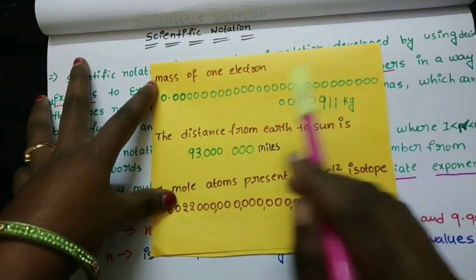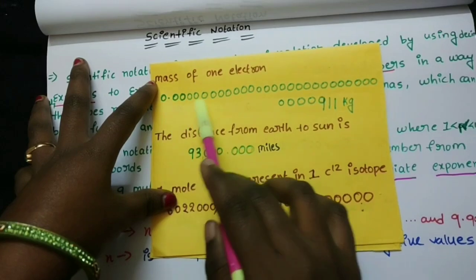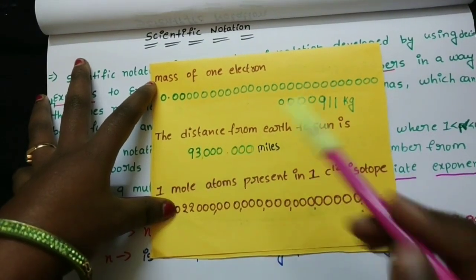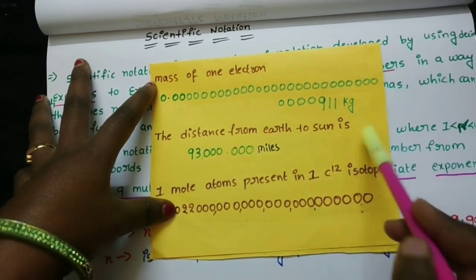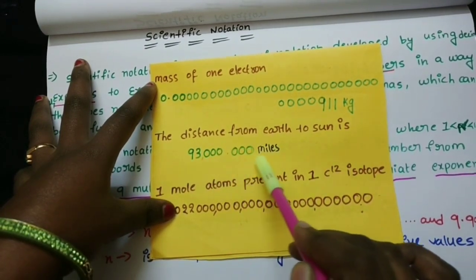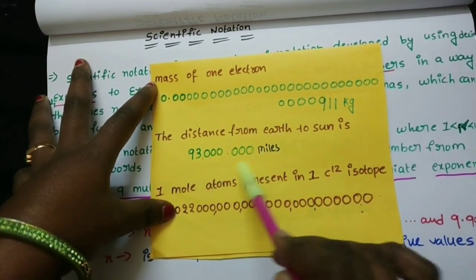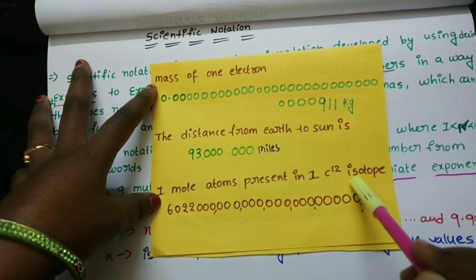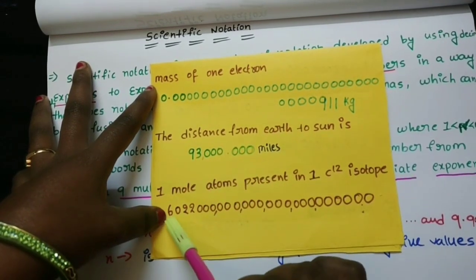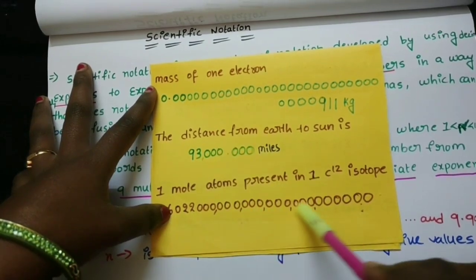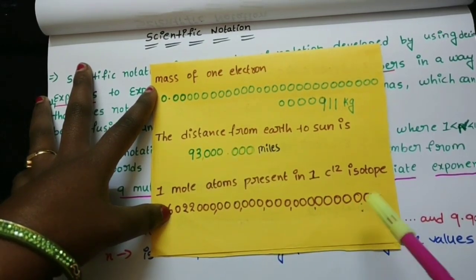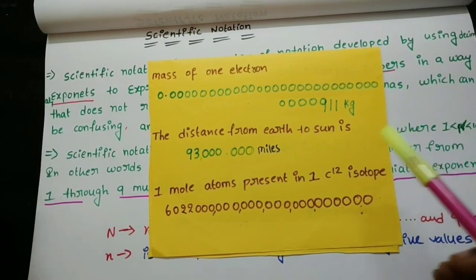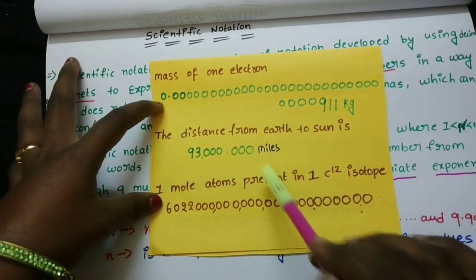We are going to talk about the mass of one electron, the distance from Earth to the Sun, and a random number of stars. Every time we want to talk about big or small numbers, it is really difficult to add all these zeros.